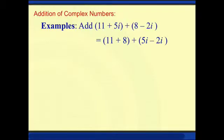So we have 11 plus 8 plus 5i minus 2i. By combining like terms, we can add 11 and 8 and subtract 5i and 2i, so we'll have 19 plus 3i as our answer.